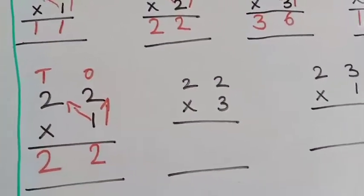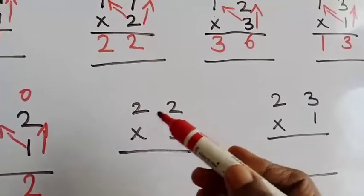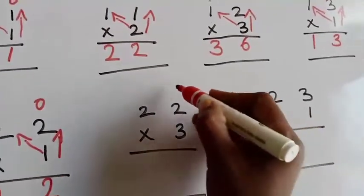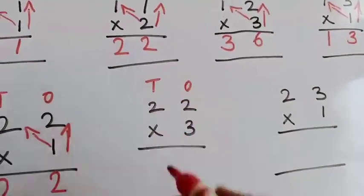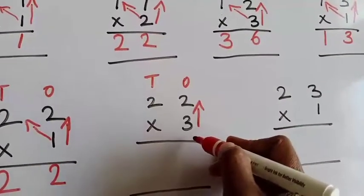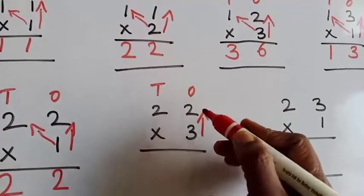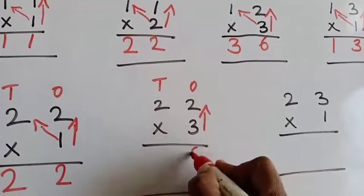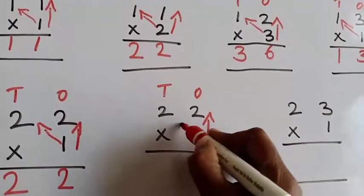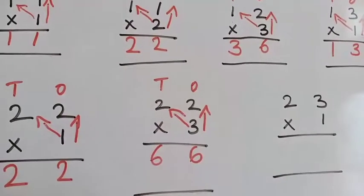The next one is 22 into 3 — 22 multiplied by 3. Write the 1's place and 10's place. Then, from below to up: 3 two's are 6. Again, cross — 3 two's are 6. Write it properly.